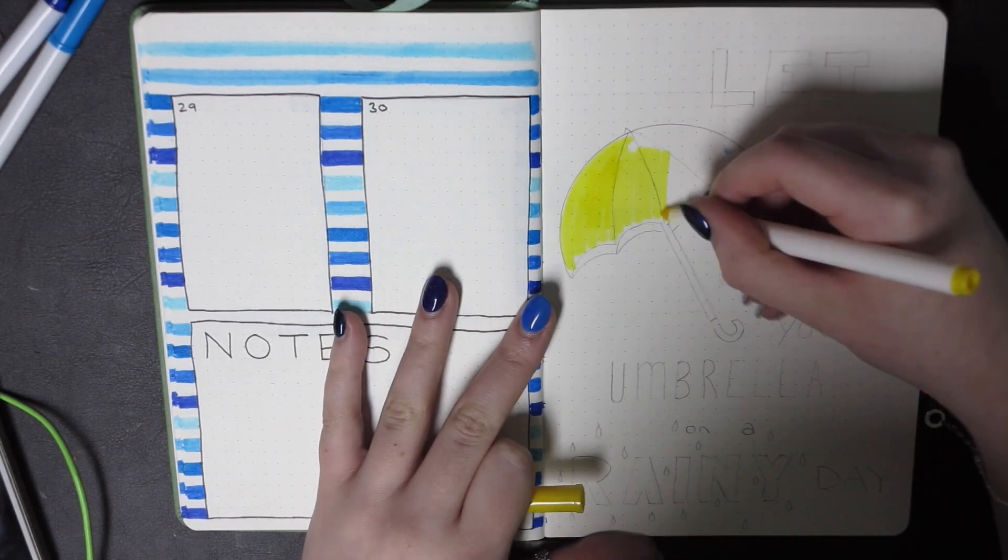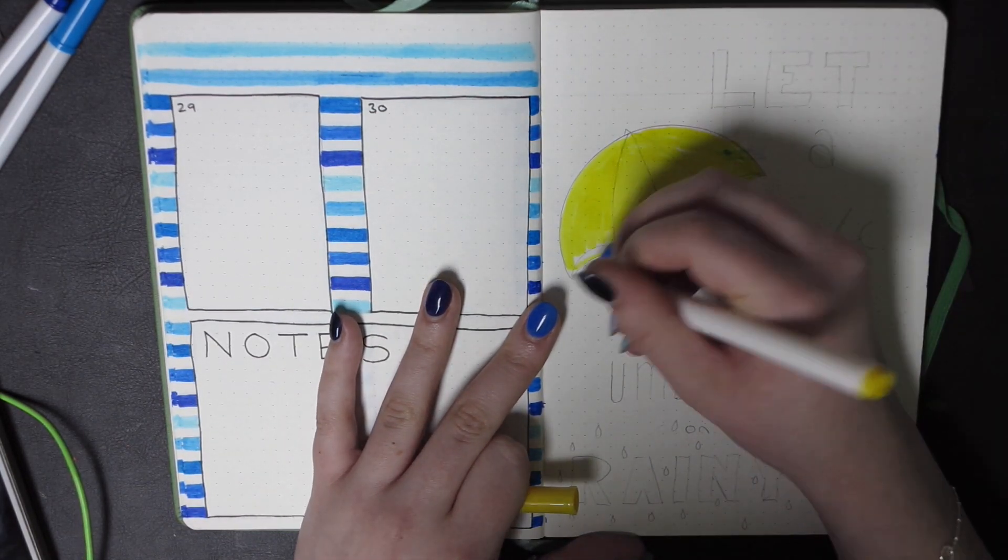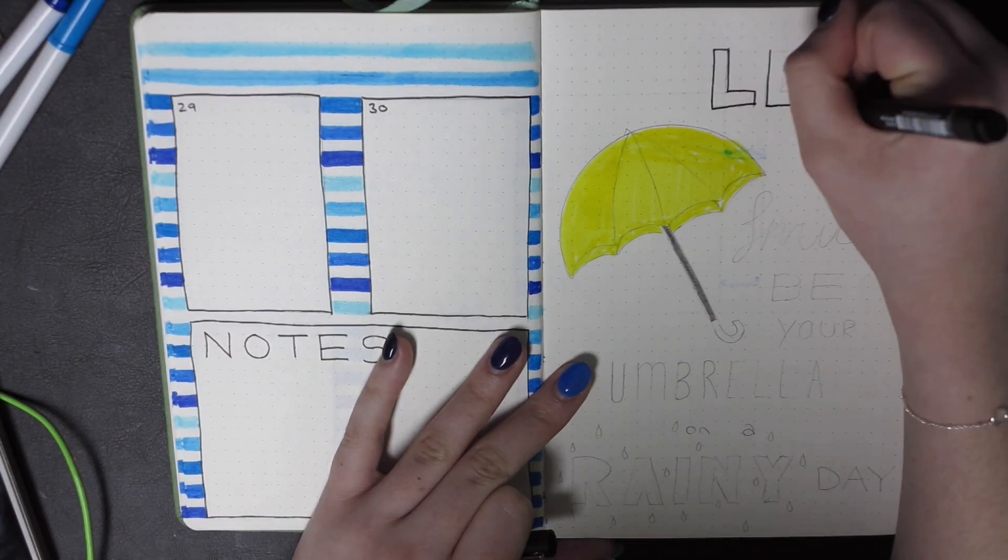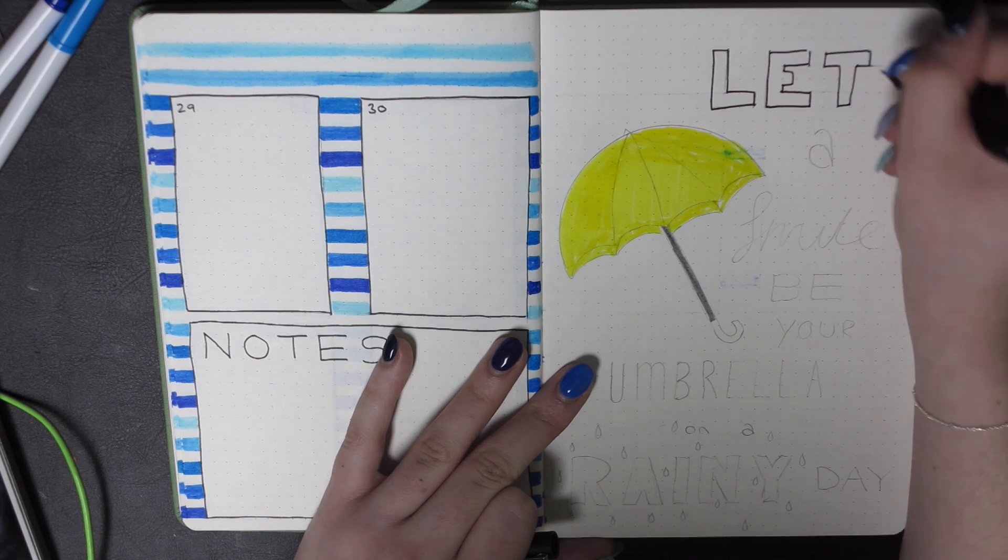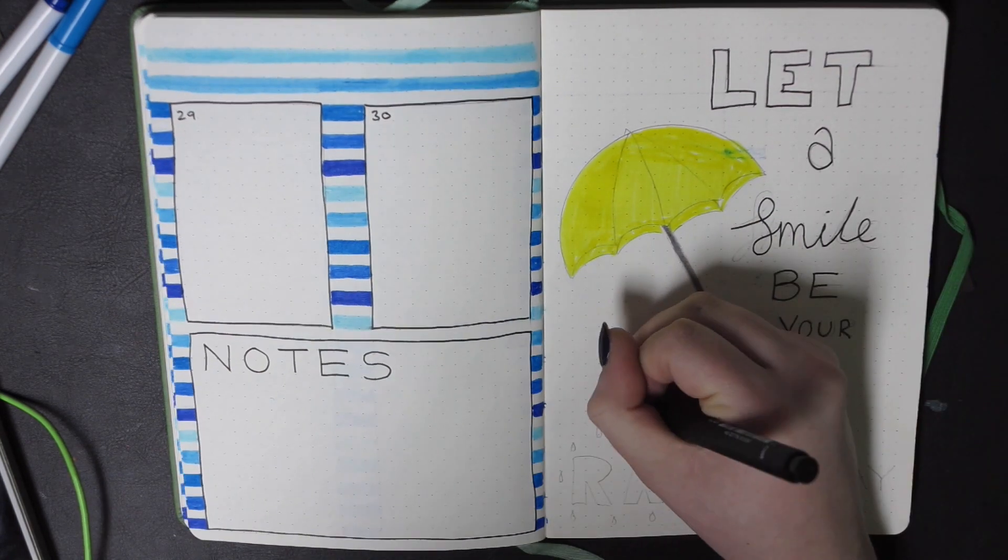These are my pages that I've done, and then obviously I'm finishing off on a quote. That quote is Let a Smile Be Your Umbrella on a Rainy Day. The only thing about this page is the fact that I've got some of the blue on it, so it's kind of gone a bit green on the umbrella where I've coloured it in yellow, but you know that's not the end of the world.